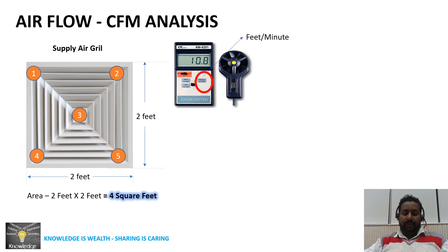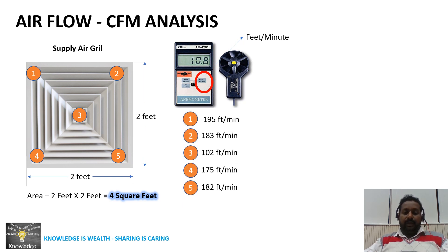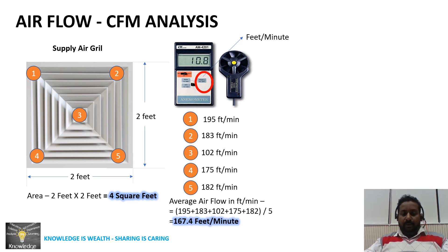I have listed out the feet-per-minute readings at five locations in this column. We need to average all five readings to get the exact CFM this supply air grill is producing. The average of all five parameters is 167.4 feet per minute. Now we have two parameters: area in square feet = 4, and average airflow = 167.4 FPM.